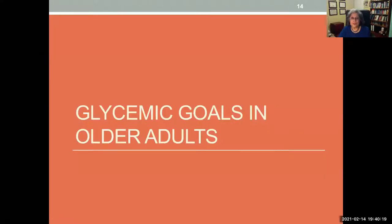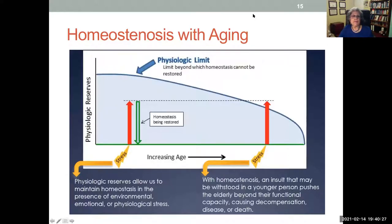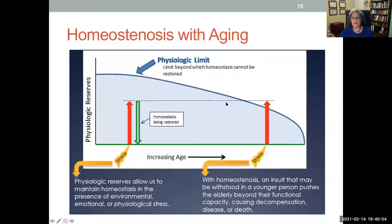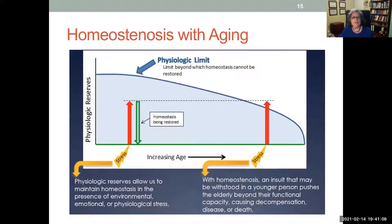To understand glycemic goals in older adults, consider the concept of homeostenosis with aging: physiologic reserves that restore homeostasis in the face of injury, stress, surgery, or major infection decline with age. When younger, you can bounce back because you have reserves. As you get older, that stress may exceed the capacity to return to homeostasis. This is why even fit older adults require careful monitoring of functional status, cognition, and propensity to hypoglycemia.